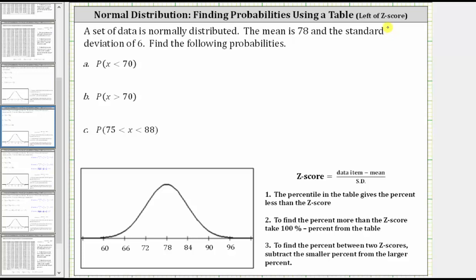The set of data is normally distributed, the mean is 78, and the standard deviation is six. We're asked to find the following probabilities, and I've already modeled the distribution shown below, where the mean is 78 and the standard deviation is six. Because we're using a table that uses z-scores, the first step is to find the corresponding z-scores for the data values of 70, 75, and 88.